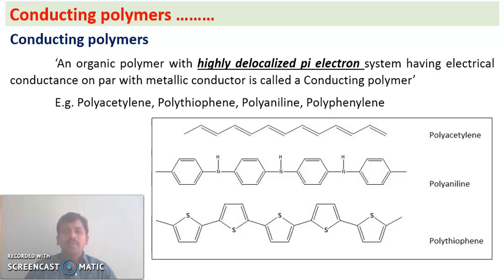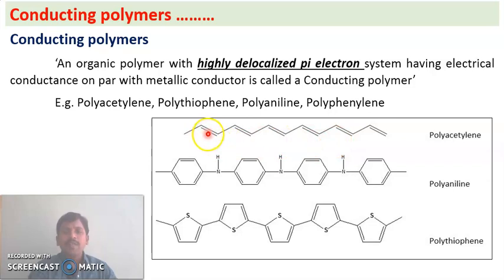Examples of conducting polymers are polyacetylene, polythiophene, polyaniline, and polyphenylene. As we can see in the picture, polyacetylene has alternating double bonds — in other words, conjugation exists in polyacetylene.